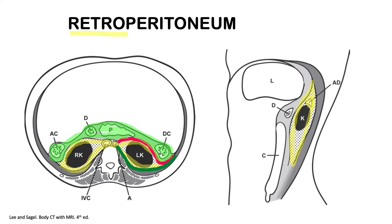Notice here that the margin of the anterior pararenal space is formed by the anterior renal fascia, shown here in pink, anteriorly. The anterior margin of the anterior pararenal space is formed by the peritoneum.